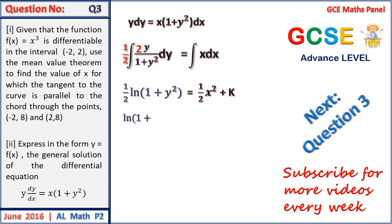Multiplying all through by 2, we have ln 1 plus y squared to be equal to x squared plus 2k. And raising both sides using the exponential value of e, we will have 1 plus y squared to be equal to e to the power x squared plus 2k.